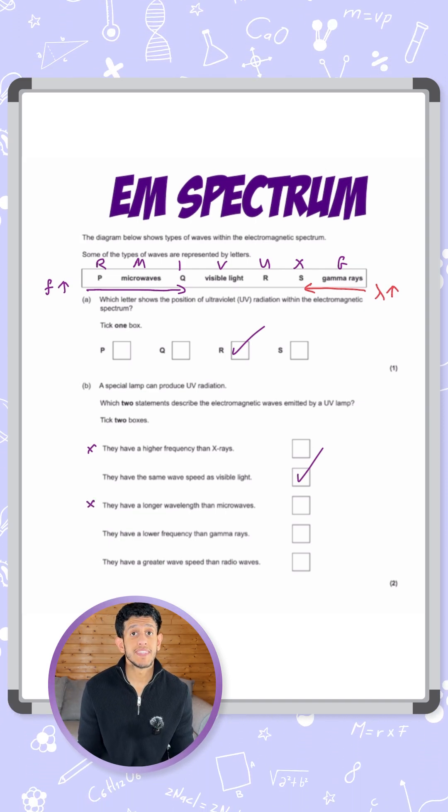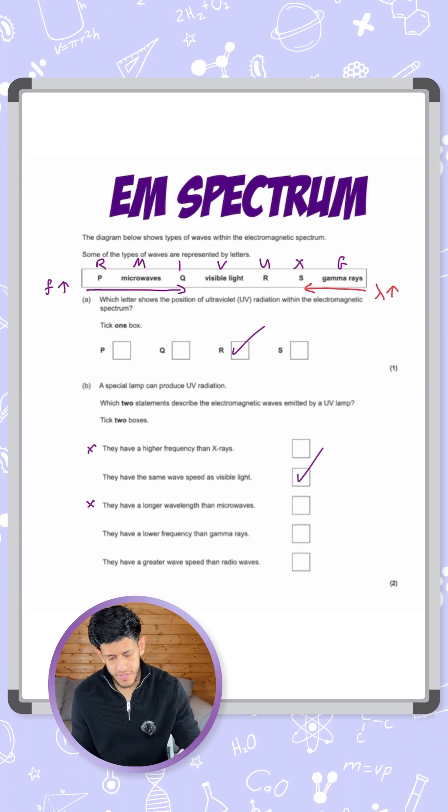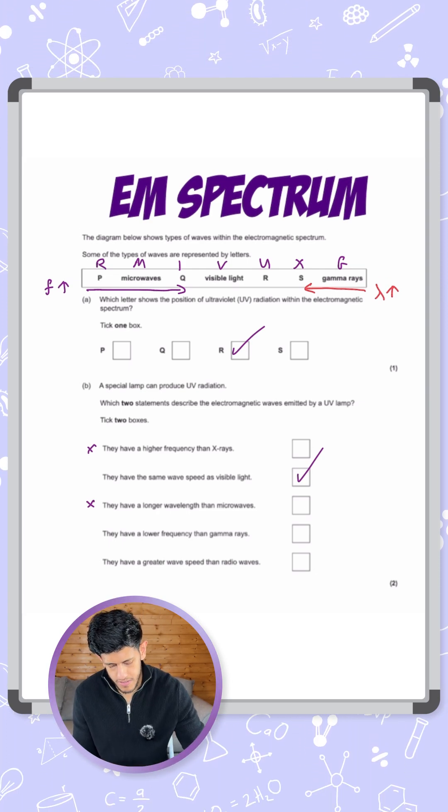Does UV have a lower frequency than gamma rays? Gamma rays has the highest frequency. Everything has a lower frequency than that. So we've identified this is also correct.